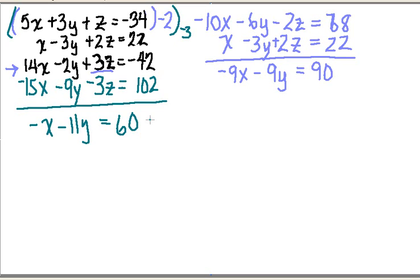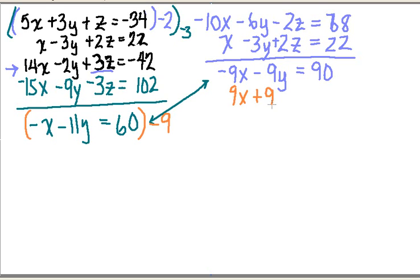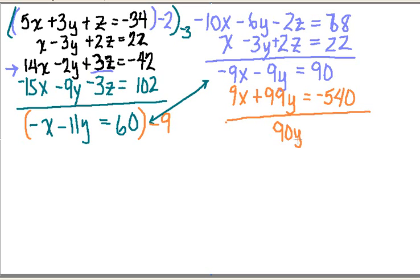So now I have two equations and two unknowns. I want to use these two equations and solve for my variables using the same elimination technique. I think the easiest thing to eliminate is going to be my x. I've got a minus x here and a minus 9x here. So the way I'm going to eliminate x is by multiplying this equation through by a negative 9. Minus 9 times minus x gives me 9x. Minus 9 times minus 11y gives me a positive 99y. And minus 9 times 60 is going to give me minus 540. Now we can eliminate our x variable by combining these two equations — minus 9x and 9x cancel. I've got 99y and a minus 9y, so that leaves me with 90y. Over here I've got minus 540 and a positive 90, leaving me a negative 450.